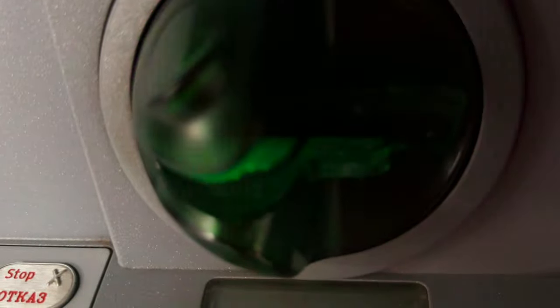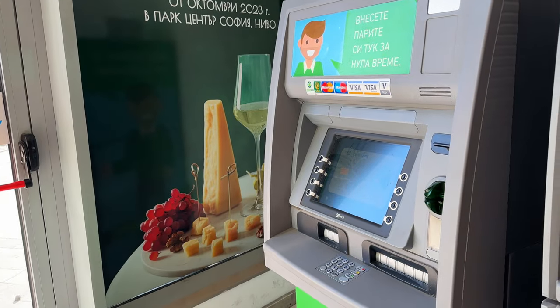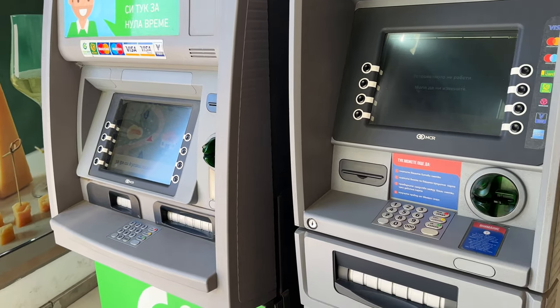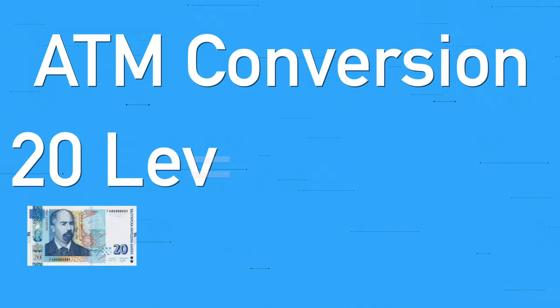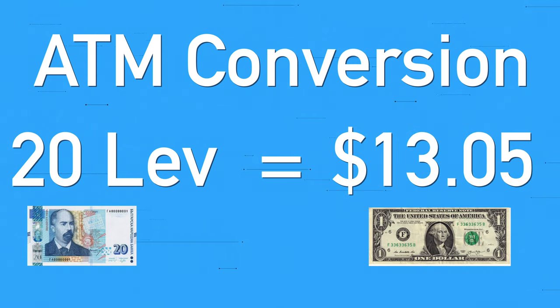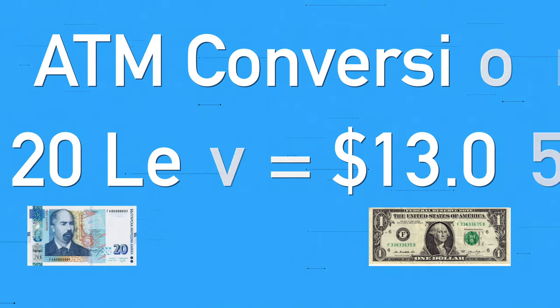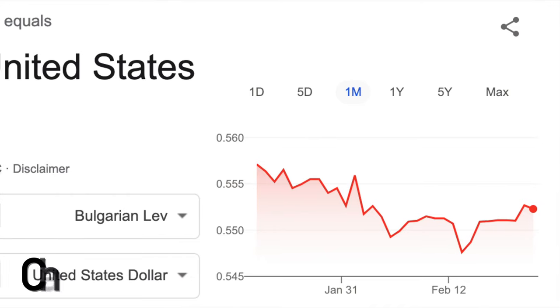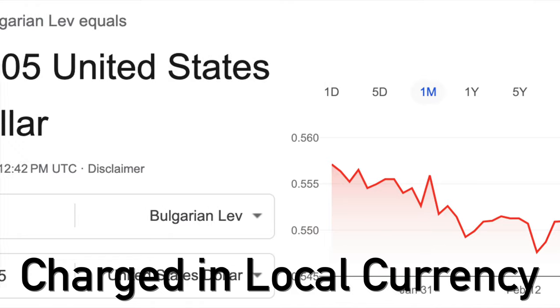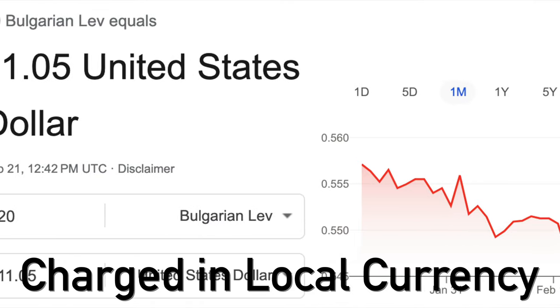To better explain this, let's say you want to take out 20 Bulgarian leva, which is about 11 US dollars. If you choose to have the ATM do the conversion for you, they might charge your bank $13 to get that 20 leva. Otherwise, when you use the alternative option — which is to be charged in the local currency — then your bank does the currency conversion, which is going to be the best rate possible without any additional charges or markup.